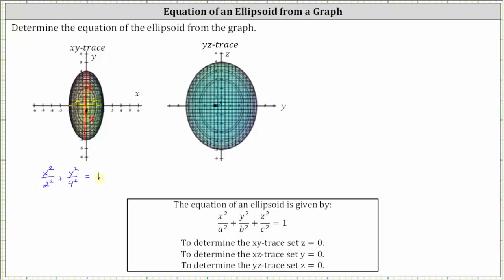Now let's take a look at the y-z trace. Notice how the axis along the y-axis is still eight units, and therefore B is still equal to four. But the axis along the z-axis is ten units, and therefore C is equal to five. So the equation of the ellipse for the y-z trace is y-squared divided by four-squared, plus z-squared divided by five-squared, equals one.